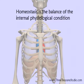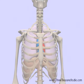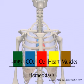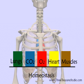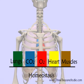Looking at what happens in the body during exercise is a great way of understanding homeostasis. In this case, we will look at the body's ability to manage oxygen and carbon dioxide levels as we go from a state of rest to a state of exercise and back again to a state of rest.